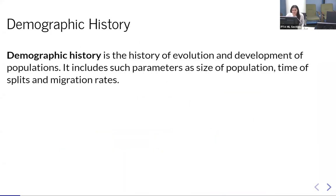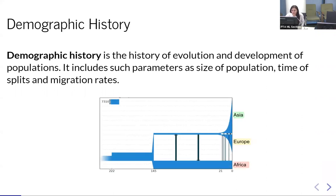Formally, demographic history is the history of evolution and development of populations. It includes parameters such as population size, time of split, migration rates, and sometimes selection rates or inbreeding rates. Today's examples will focus only on population size, split times, and migration rates. Let me show a picture of demographic history for three populations of modern humans.